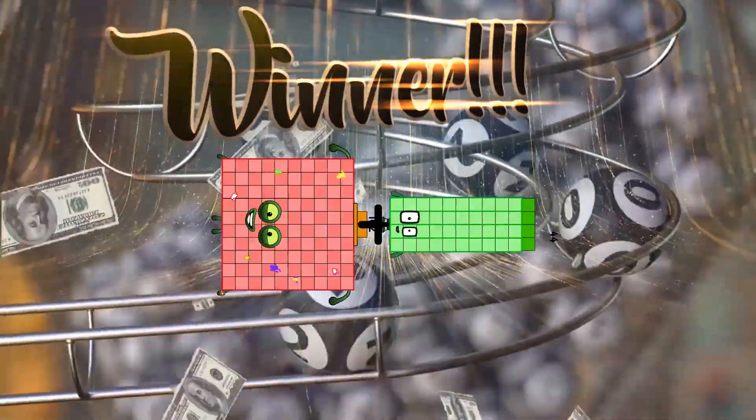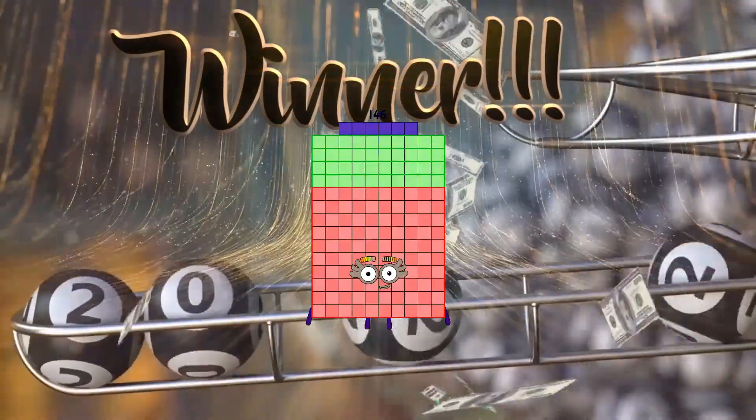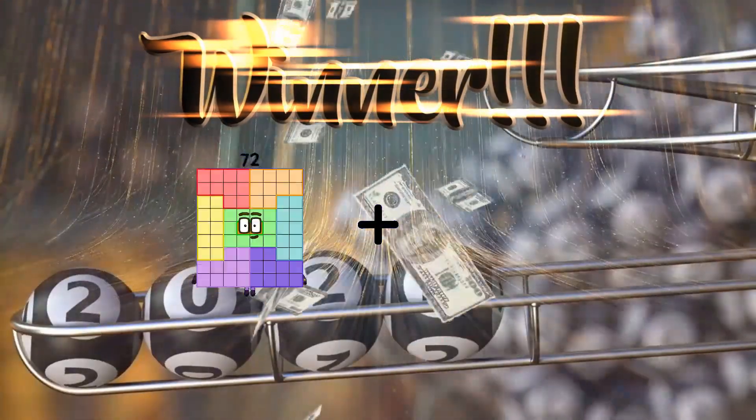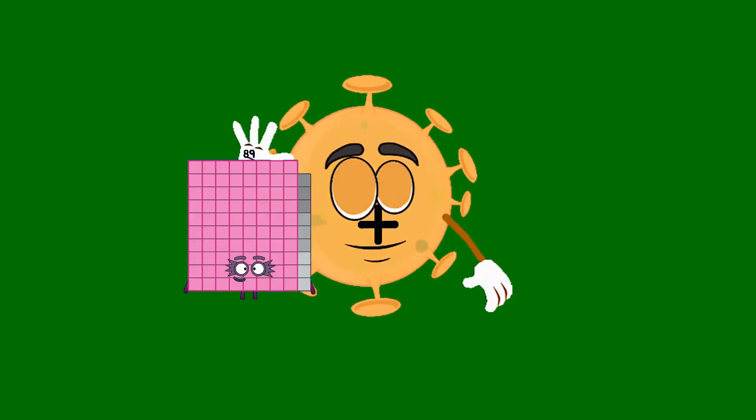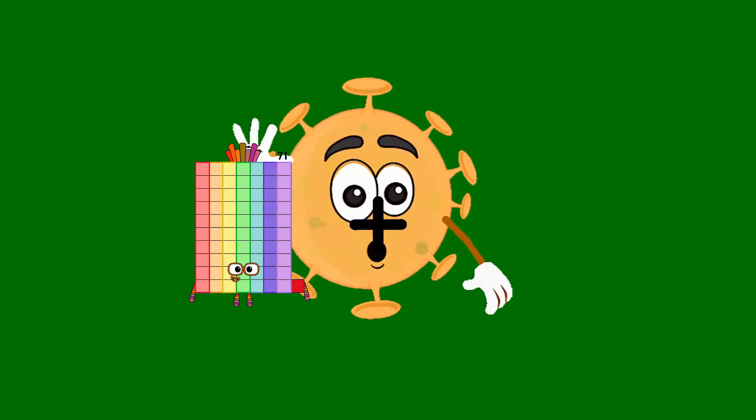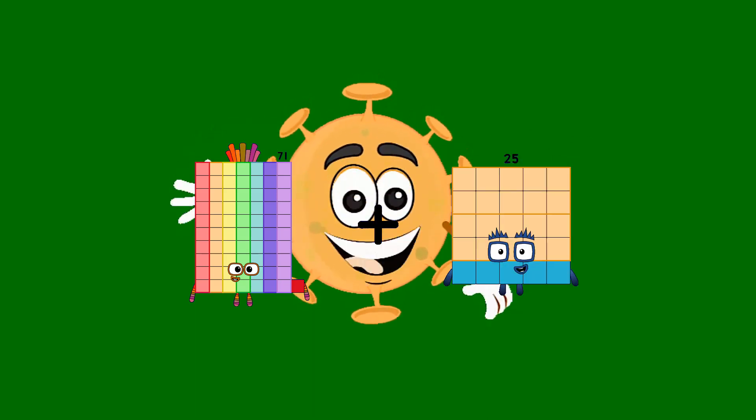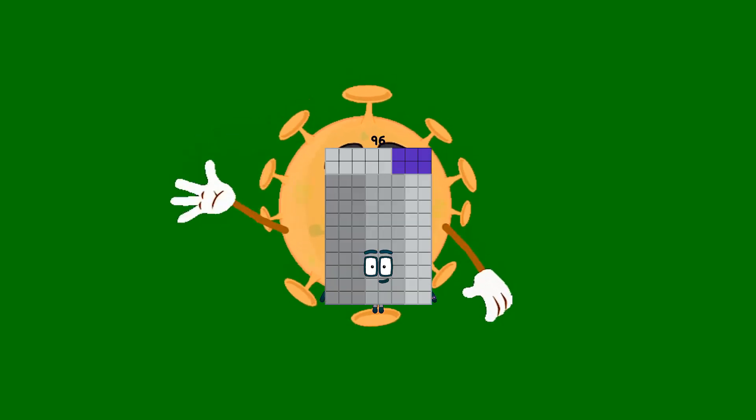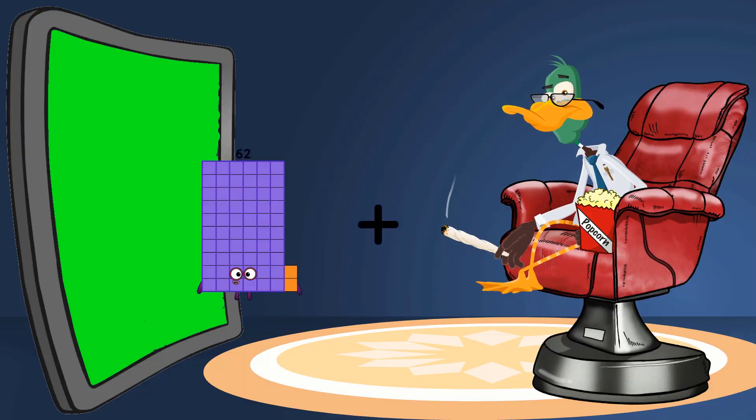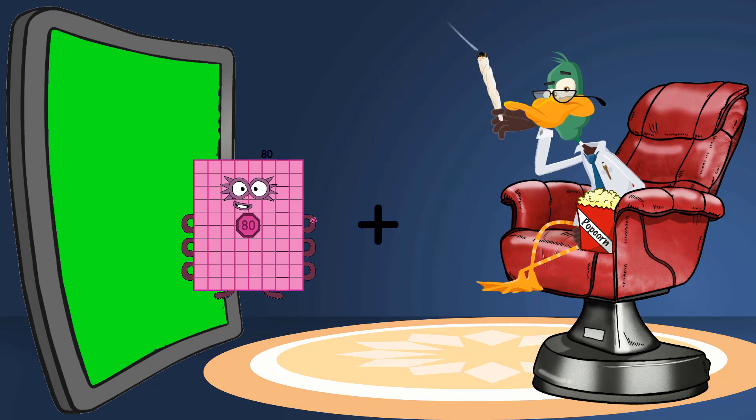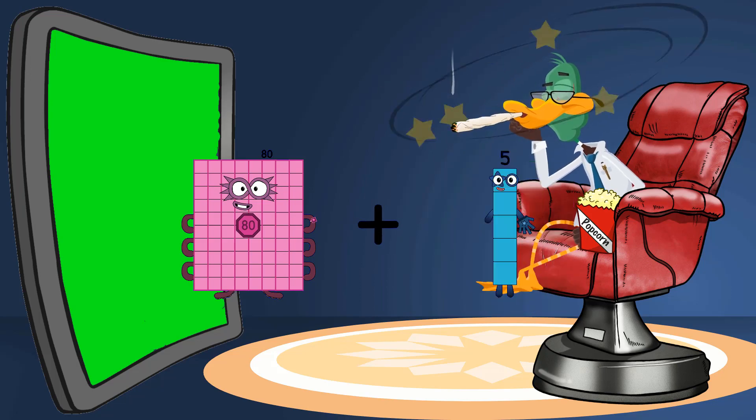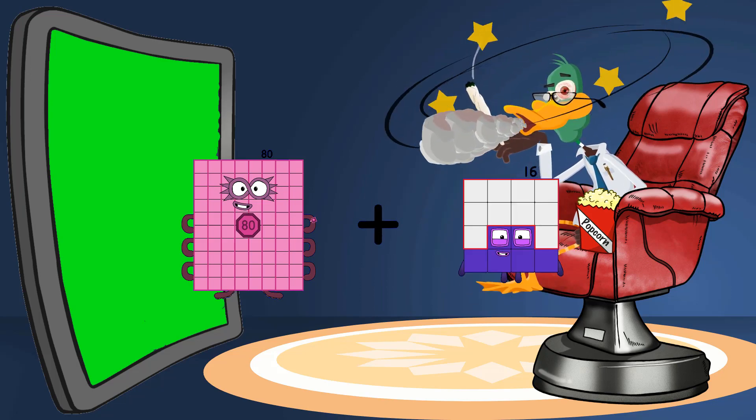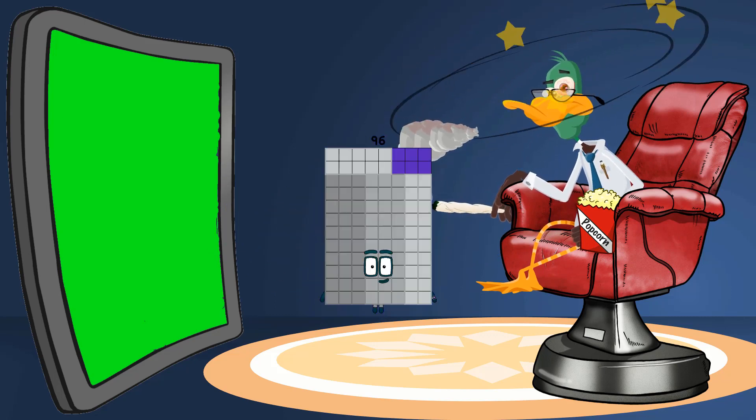102 plus 44 equals 146, 71 plus 25 equals 96, 80 plus 16 equals 96.